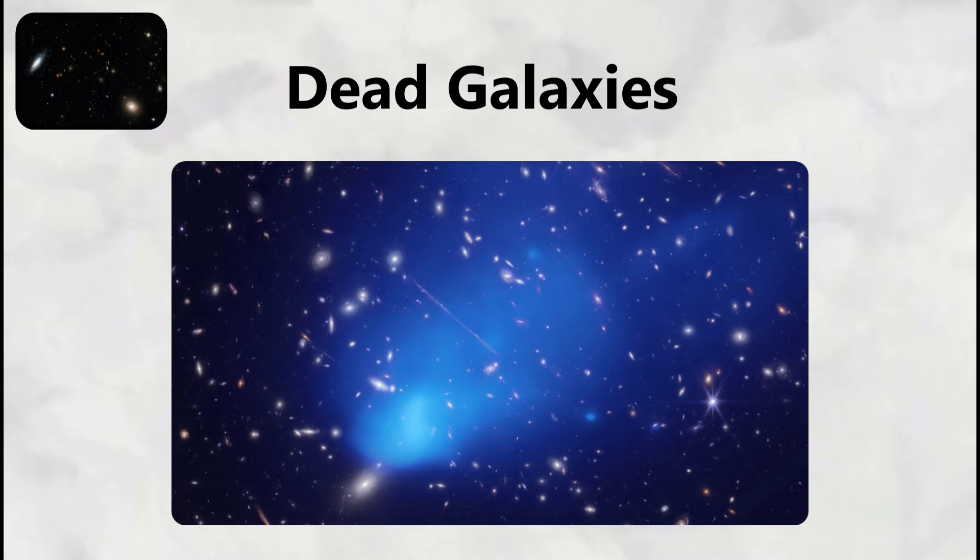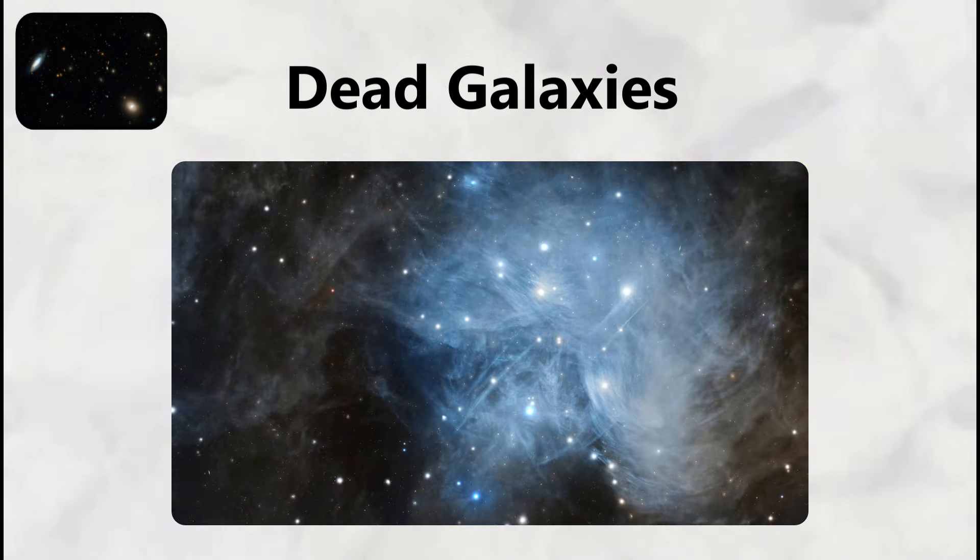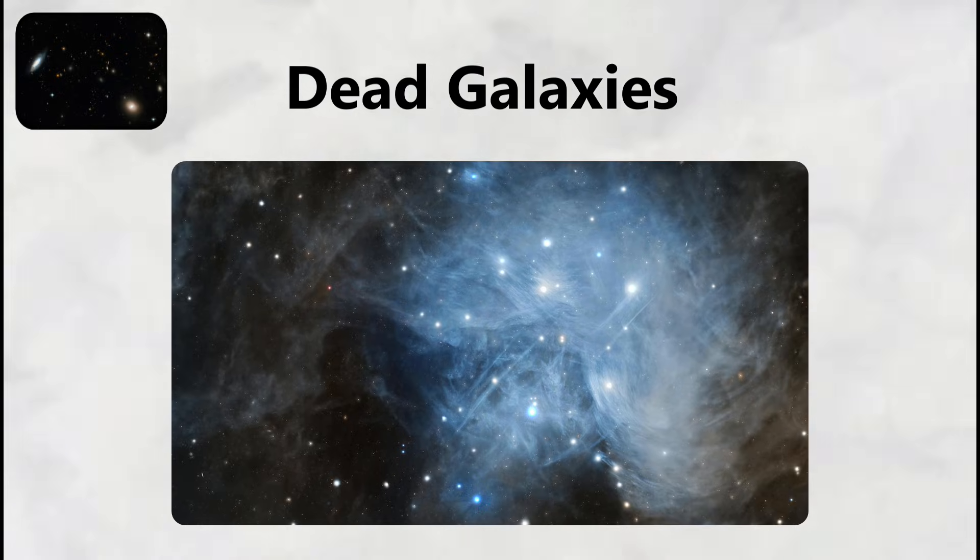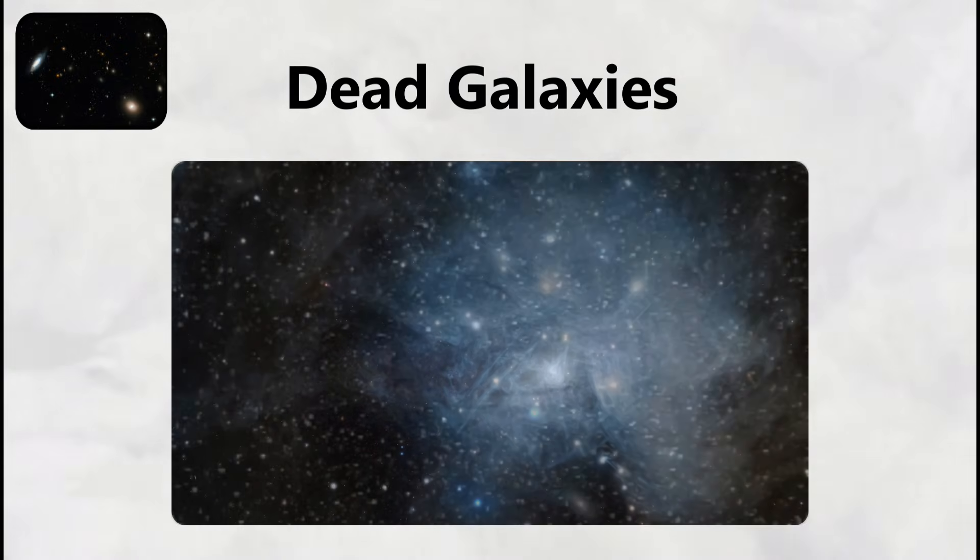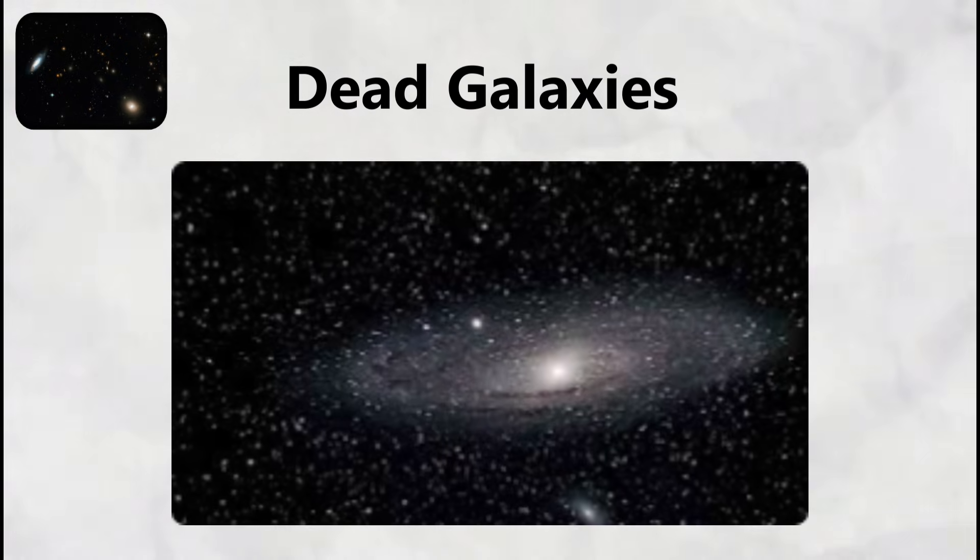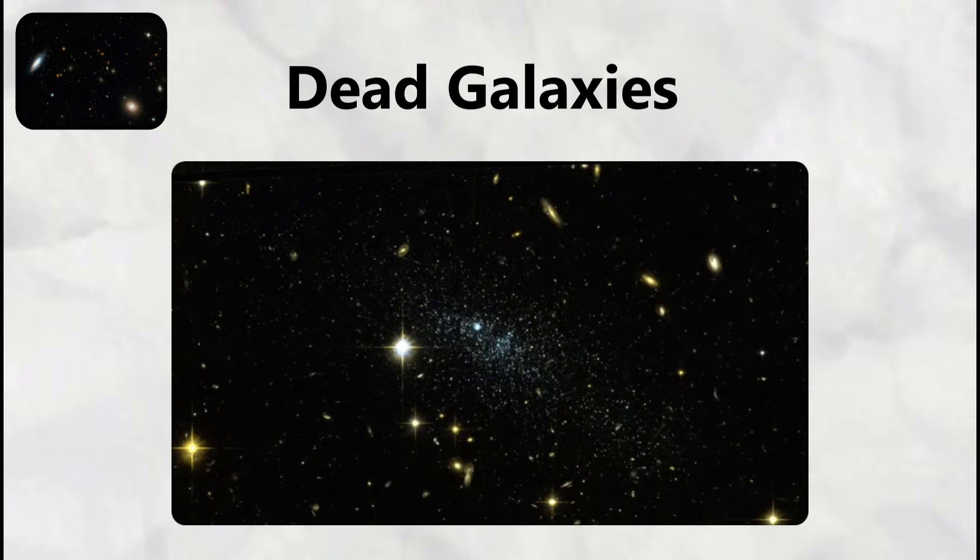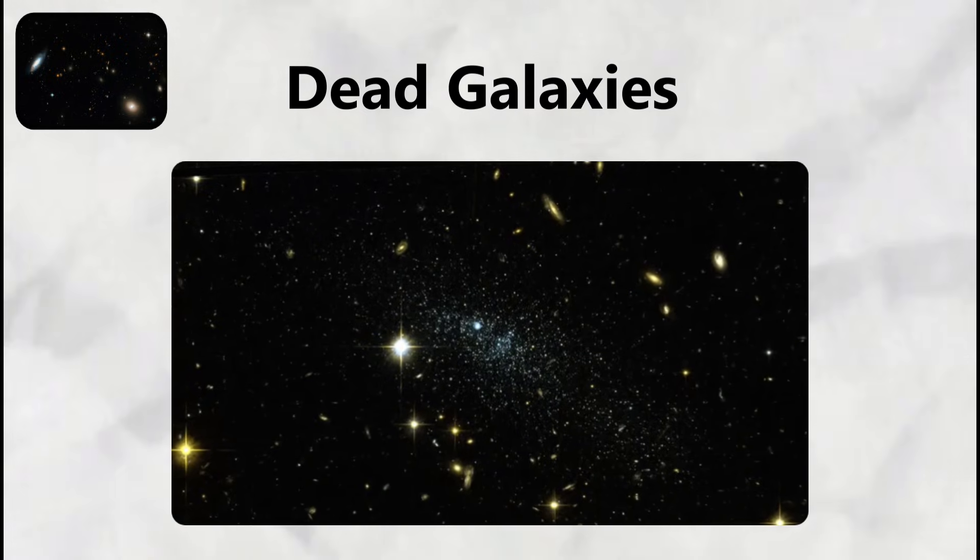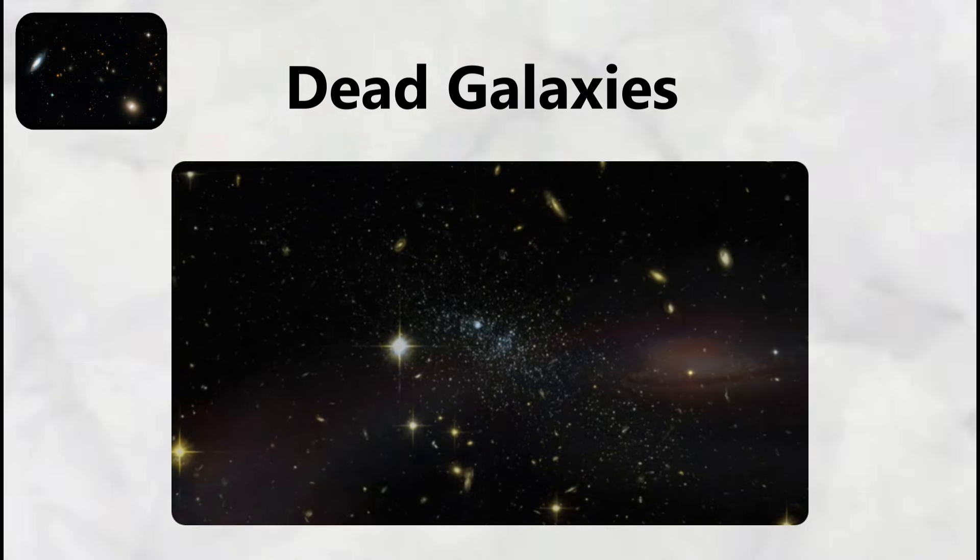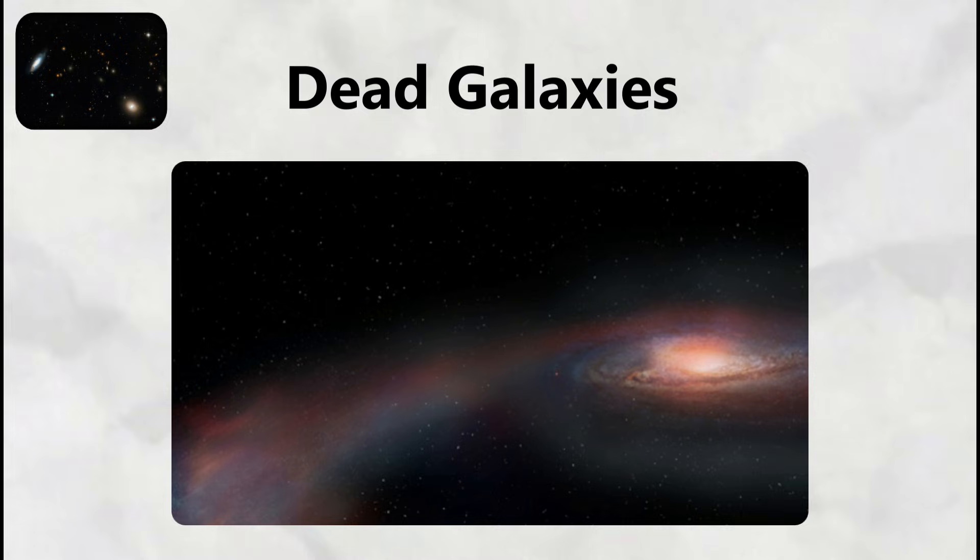The galaxy contains a mass equivalent to 300 billion suns, but unlike active galaxies that continuously birth new stars from clouds of gas and dust, Max 21291 exhausted its star-forming material billions of years ago. Without fresh hydrogen and helium to fuel stellar nurseries, the galaxy's existing stars are aging and dying without replacement, creating a population of increasingly dim red dwarf stars and stellar remnants.